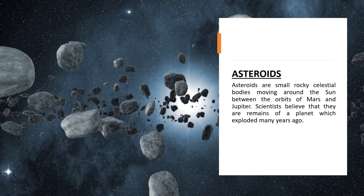Asteroids are small rocky celestial bodies moving around the sun between the orbit of Mars and Jupiter. When we were learning about the inner and outer planets, after the first four planets — Mercury, Venus, Earth and Mars — there is a belt of asteroids between Mars and Jupiter. They are rocks.